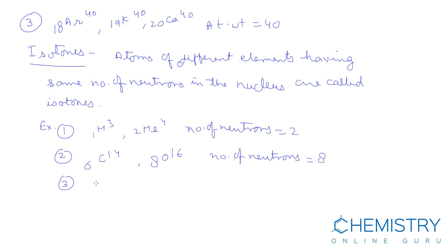Example number 3: 14Si30, 15P31, 16S32. Number of neutrons equal to 16: 30-14 is 16, 31-15 equal to 16, 32-16 equal to 16. So these are isotones.